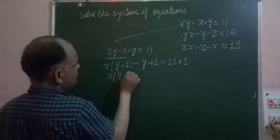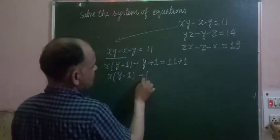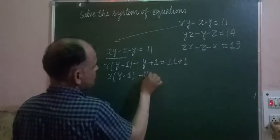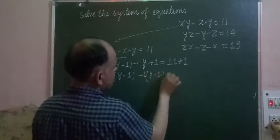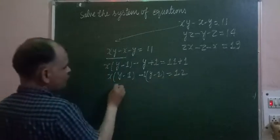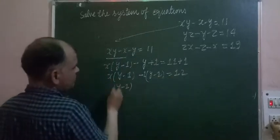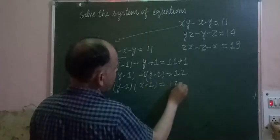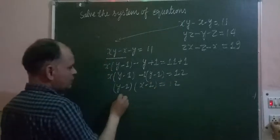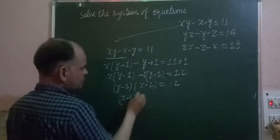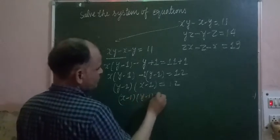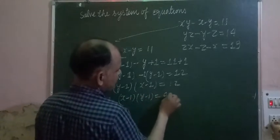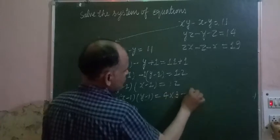So x times (y - 1) minus 1, taking -1 common, gives us (y - 1) times (x - 1) equals 12. We can write this as (x - 1)(y - 1) = 4 × 3. This is our first equation.